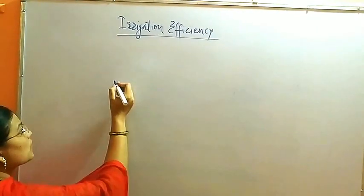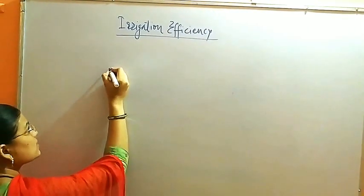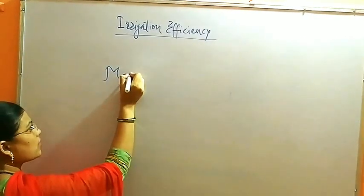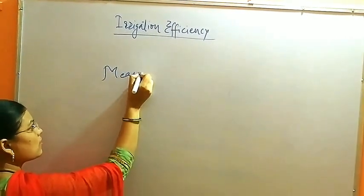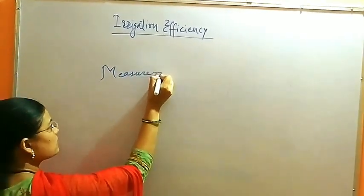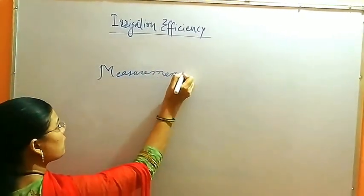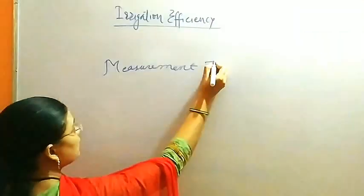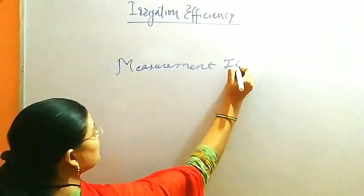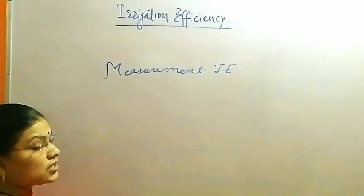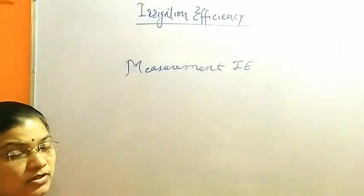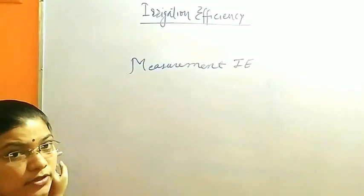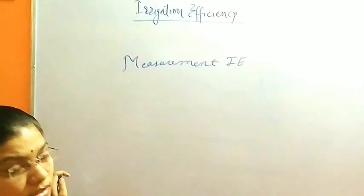Next, we discuss the measurement of irrigation efficiency. By various means we have to measure irrigation efficiency: irrigation application efficiency, water application efficiency, and water distribution efficiency.